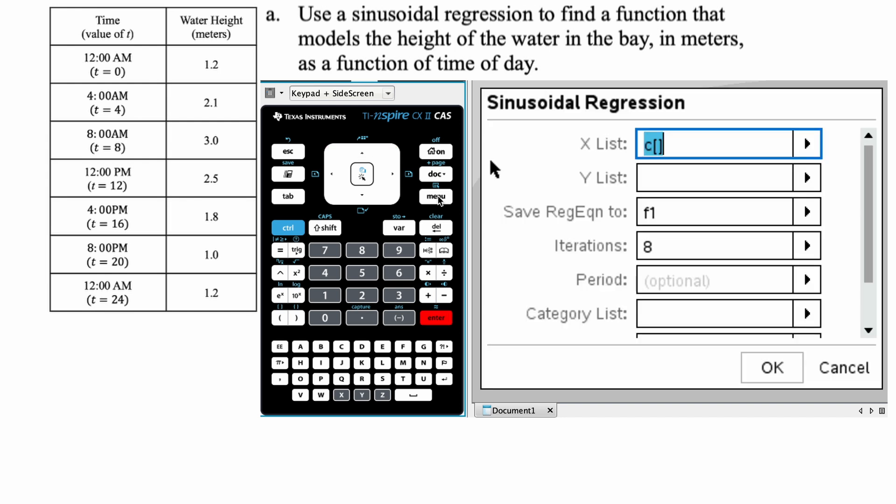All right, first up, we need the X list. So all of my X values are actually in column A. So you can see it's telling you to do a column, you need these brackets, right? So I'm going to change this C into A, and then I'm going to press tab, and now all my Y values are in B, so I'm going to press the letter B.